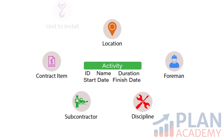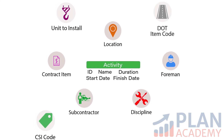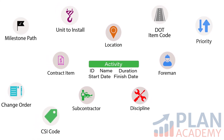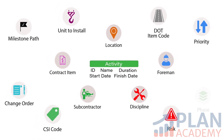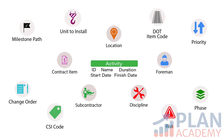And in truth, the possibilities here are endless — because Activity Codes are customizable tags that you create however you want. Now, having all of this additional information in your project schedule is all very nice. But is that all you can do? Nope. There's so much more.